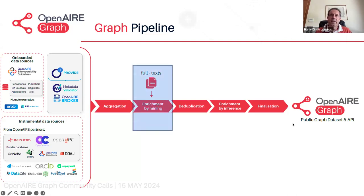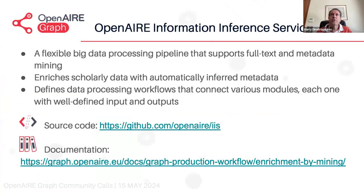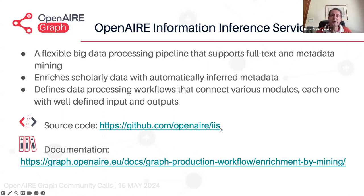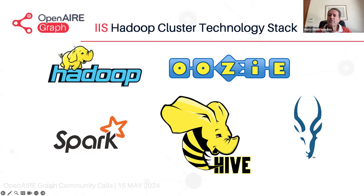Today's focus is on the full text enrichment by mining. To do that, I have to mention IIS — the OpenAIRE Information Inference Service. It's a flexible, big data processing pipeline that supports full text mining and also metadata mining. The point is to enrich scholarly data with automatically inferred metadata. IIS defines data processing workflows connecting various mining modules, each with well-defined inputs and outputs. The source code is available on GitHub and the documentation can be found in the graph documentation pages under the enrichment by mining category.